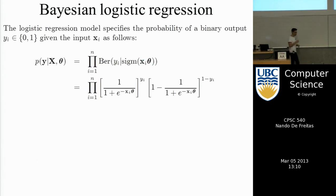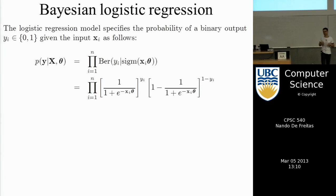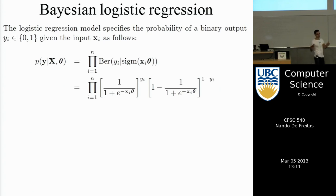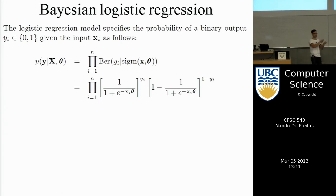Now I want to switch gears and talk about a different way of doing learning — the Bayesian way. In the Bayesian way we still use a likelihood like in frequentist learning, but we also specify a prior on the parameters. For linear regression, we had a Gaussian likelihood and used a Gaussian prior, and by completing the square you showed the posterior is also Gaussian and everything could be done by hand. In this case we will not be able to do it by hand.